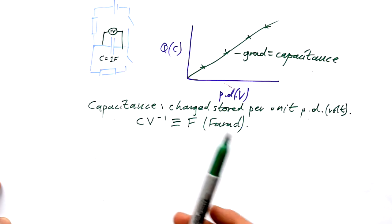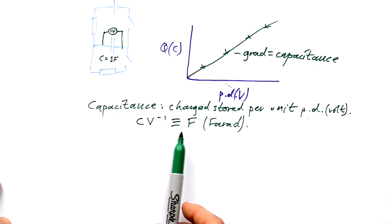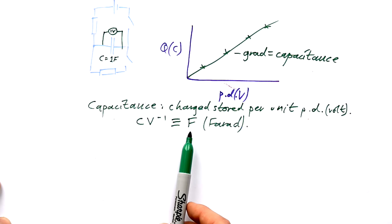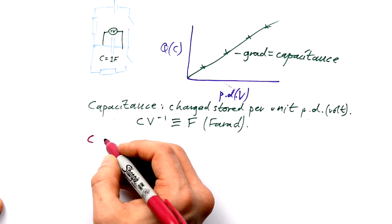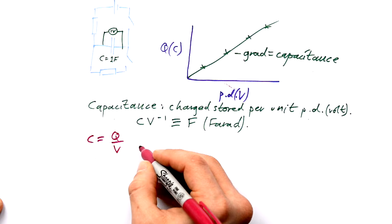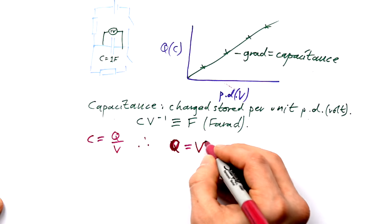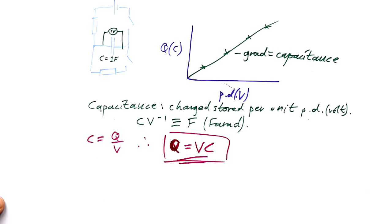In reality, storing a coulomb per volt is ridiculously large. In practice, capacitors have capacitances of microfarads, nanofarads, or even smaller. We can write: capacitance C (not current, not charge) equals charge Q divided by voltage V. So our key equation is Q = VC — the charge stored on a capacitor equals the PD applied across it times its capacitance in farads. The gradient of the charge-versus-voltage graph is the capacitance, Q divided by V.